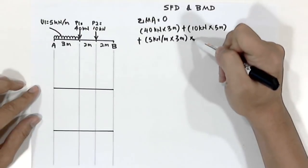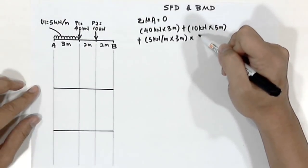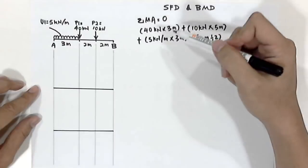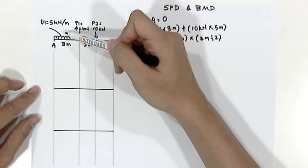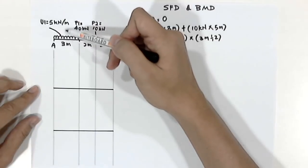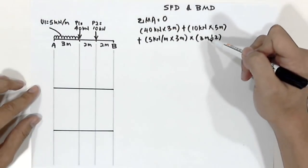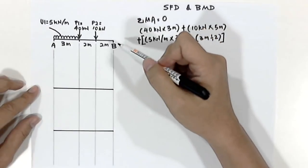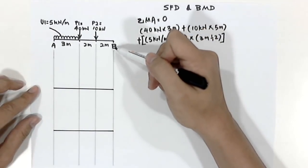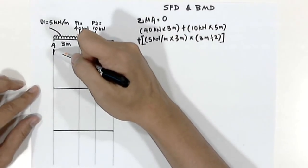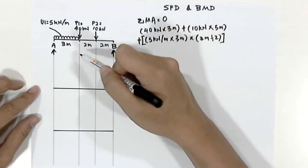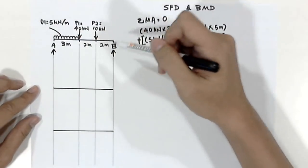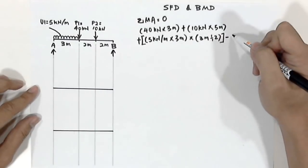Then we have to multiply by the new distance, which is 3 meters divided by 2. The newly converted uniform load will be acting at the middle of the span, that's why you multiply by 3 meters divided by 2. The last term will be the reaction force Rb. To counter all the loads we have Ra and Rb, so Rb will be an anti-clockwise force, therefore it is a negative force, multiplied by 7 meters, which is the distance from point A.